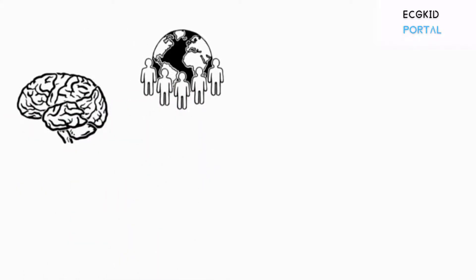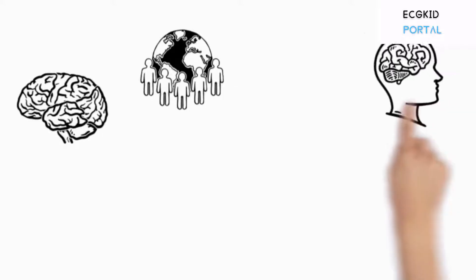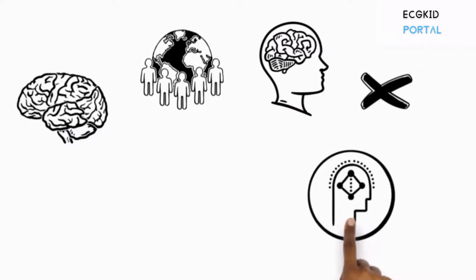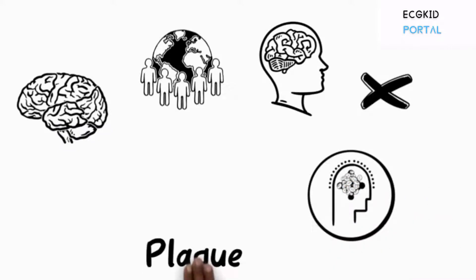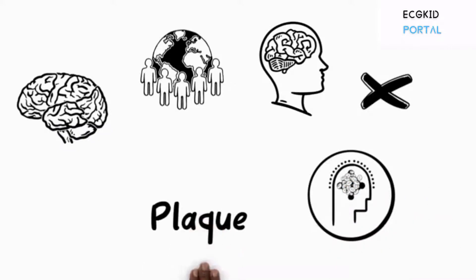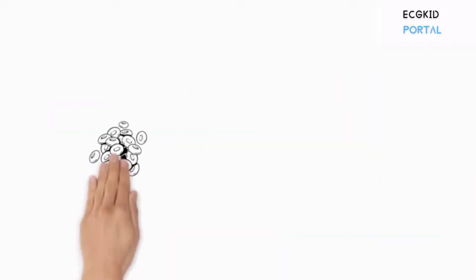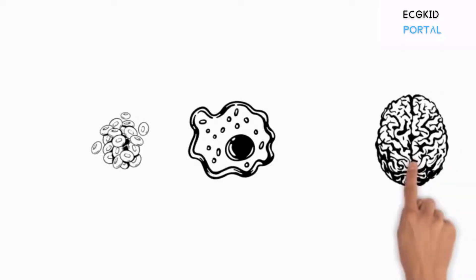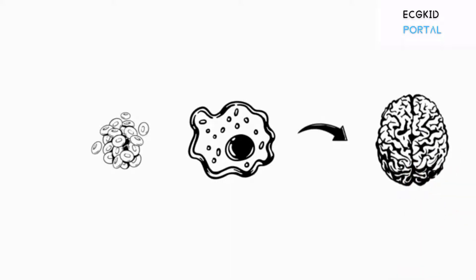In ischemic stroke, which accounts for about 87% of the overall stroke population, there will be reduced blood supply to the brain due to blockage or narrowing of brain arteries caused by deposition of fatty material inside the vessels, called plaque. Plaque could be a blood clot, an atherosclerotic mass, or any material that causes clogging in these arteries.